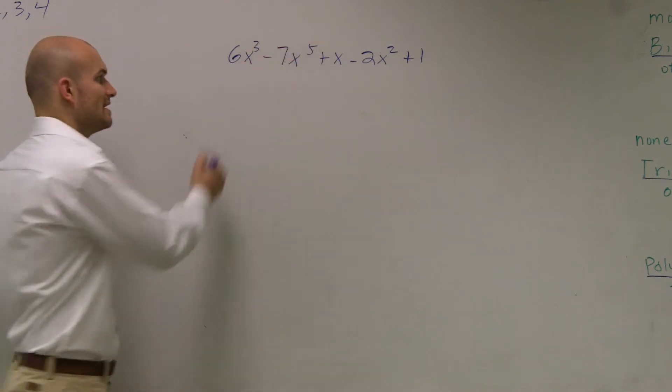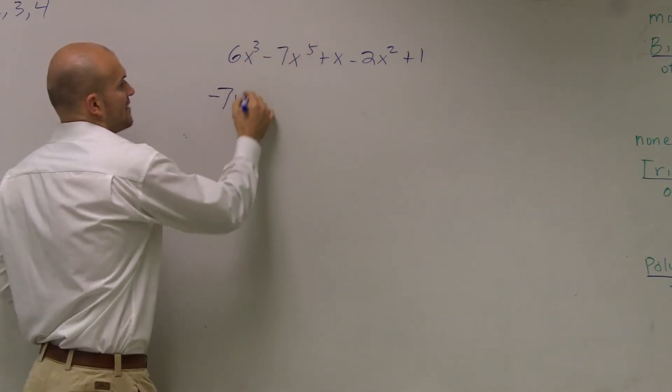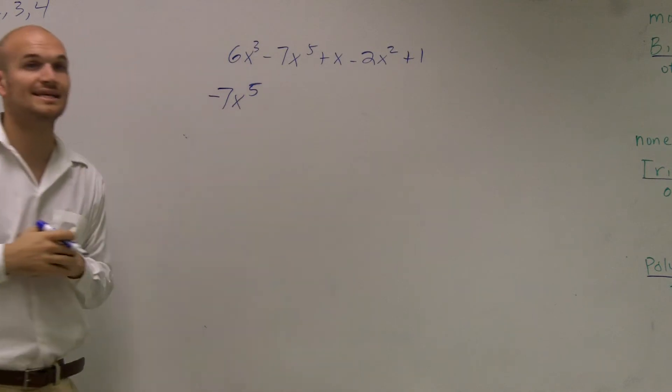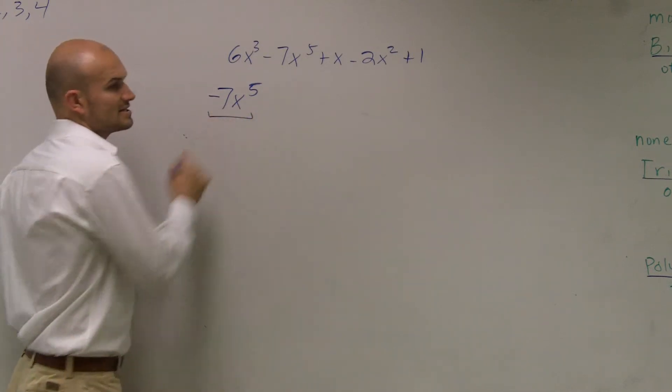So I take that whole term and I write that first. So it's negative 7x to the fifth. That's going to be my leading term, which is going to be very important for us in a second.